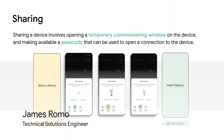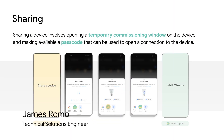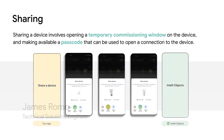Sharing a device involves opening a temporary commissioning flow on the device and either picking the app you want to use, or using a provided passcode that can be used to open a connection to the device.